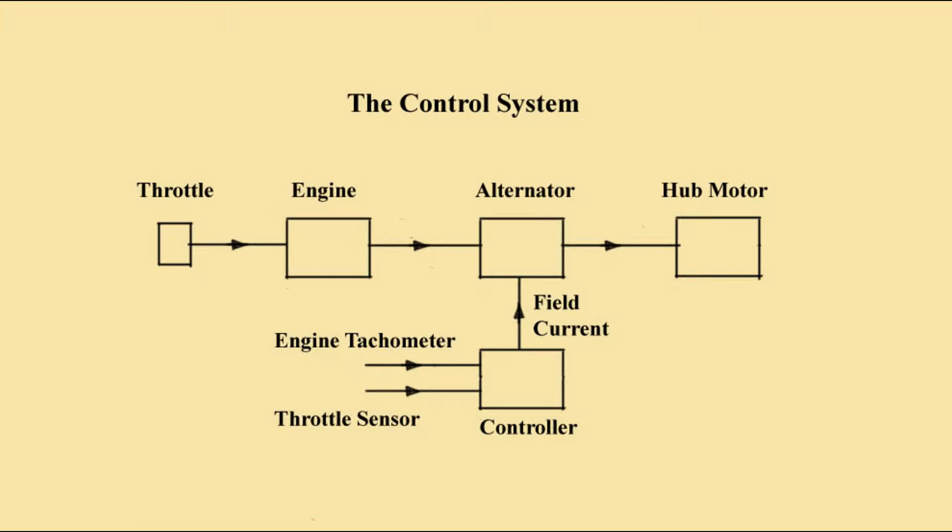These are the main components of the powertrain. A small petrol engine drives an alternator to send electrical power to a hub motor. The controller loads the engine to its maximum power RPM. This RPM is independent of the motor load and is proportional to the engine's throttle.